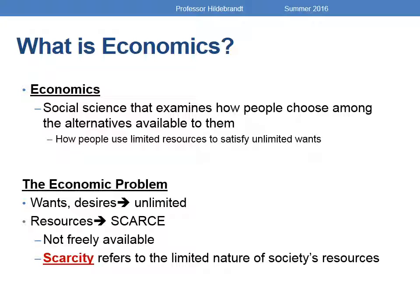Specifically, we're studying how people are going to use the limited resources they have available to satisfy their unlimited wants. We call this the main economic problem: individuals have unlimited wants and desires, but our resources are scarce — that means there's not enough.